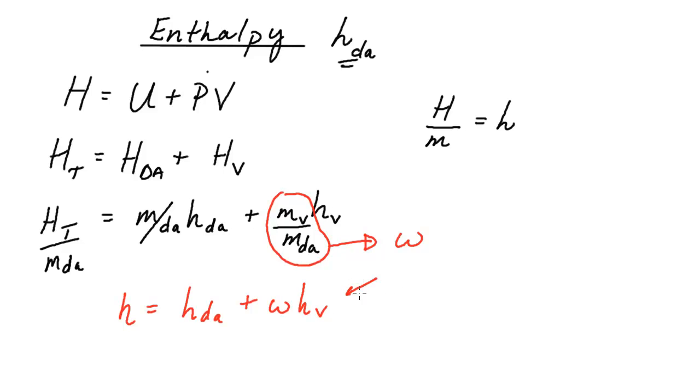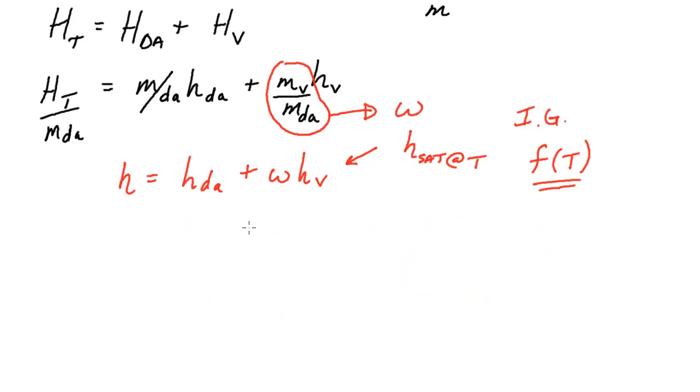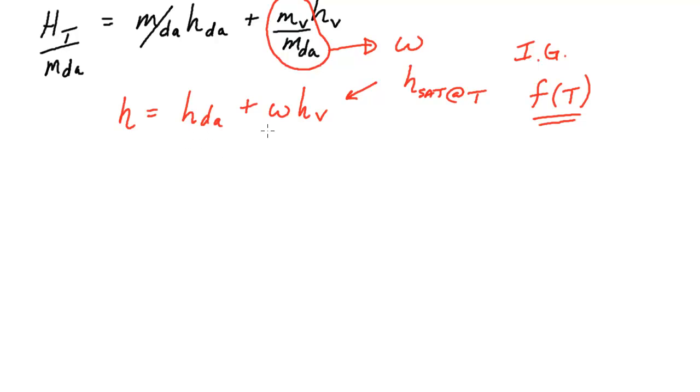And we can do one more thing. We can say for our conditions at low pressures and temperatures that this enthalpy of the vapor is actually equal to the enthalpy at saturation at a given temperature. And because we're dealing with ideal gas relations, we're assuming everything is ideal gas, everything is just going to be a function of temperature alone. So at this point now we actually have numerical relationships for this term and this term, and it becomes fairly straightforward to compute.